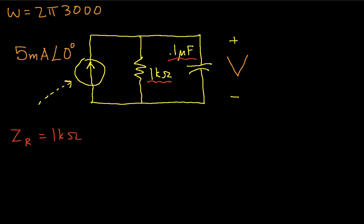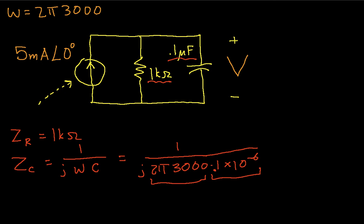For the capacitor, we know that the impedance of the capacitor is 1 over jωC, which in this case is 1 over j times 2π times 3000 times 0.1 times 10 to the minus 6th. That's the microfarad. That's omega. And when we work this out,